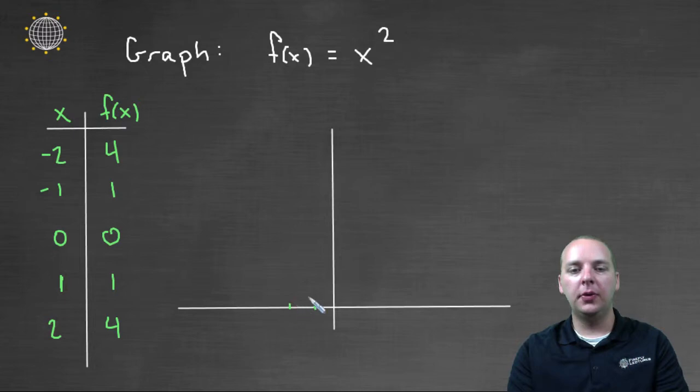So when you start plotting these, negative two comma four, negative one comma one, zero comma zero, one comma one, and two comma four. Whoa, do you see what happens here?